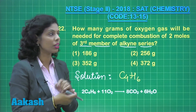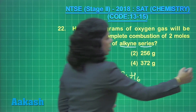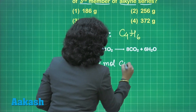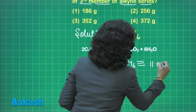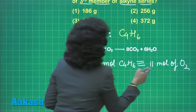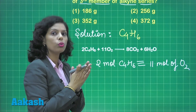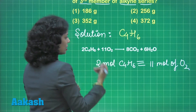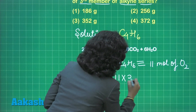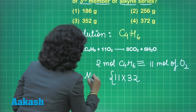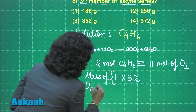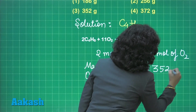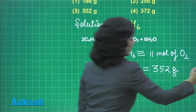Two moles of C₄H₆ need 11 moles of oxygen. To calculate the mass of oxygen, multiply the moles of oxygen by its molar mass, which is 32 g/mol. Therefore, the mass of oxygen needed equals 11 × 32 = 352 grams.